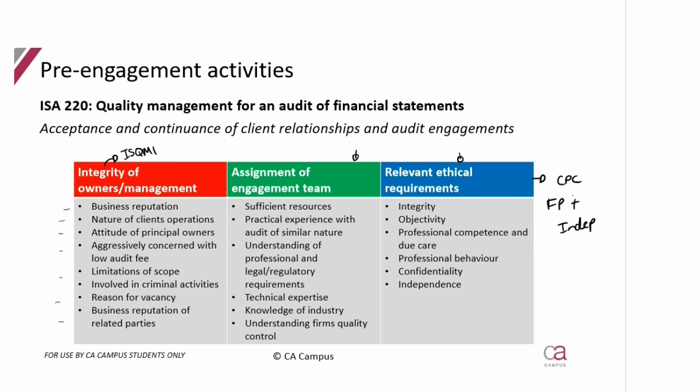For assigning of the team, you look at what industry the entity is in to determine whether your staff have experience in that industry. They need practical experience or an understanding of the industry and its professional, legal, and regulatory requirements. There must be sufficient resources, and timing is a huge factor — you must consider the deadline. Technical expertise must also be available to the audit team if needed.